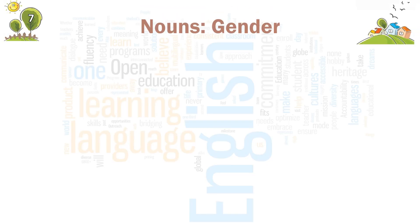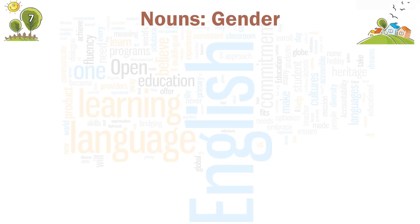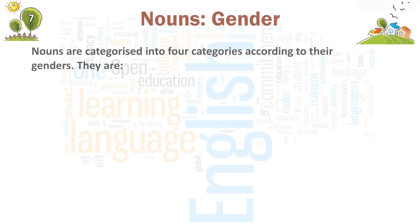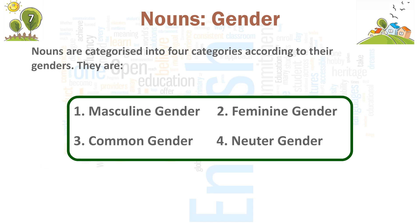Chapter 7. Nouns. Gender. Nouns are categorized into four categories according to their genders. They are: 1. Masculine gender, 2. Feminine gender, 3. Common gender, 4. Neuter gender.